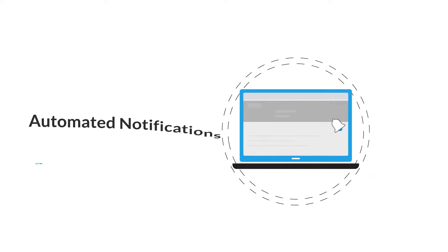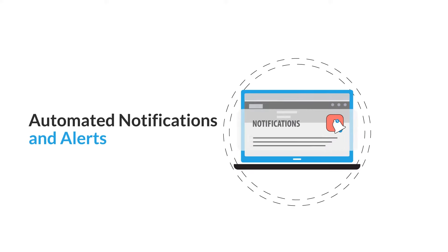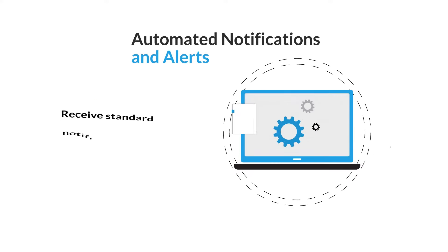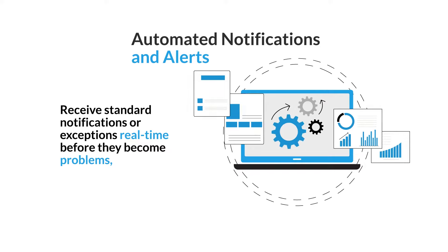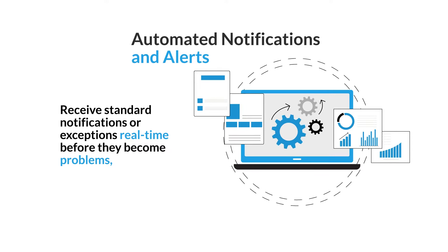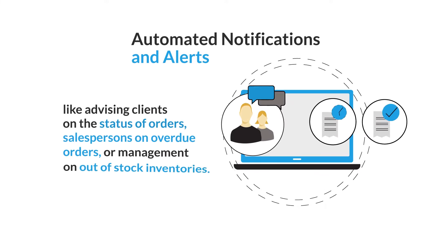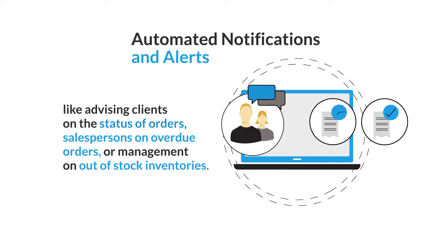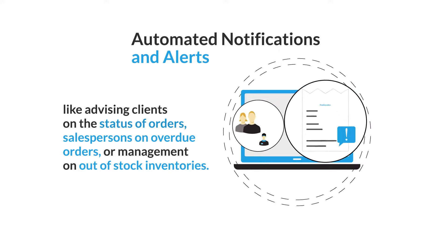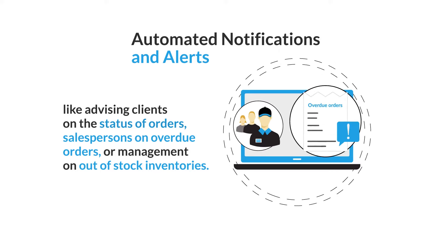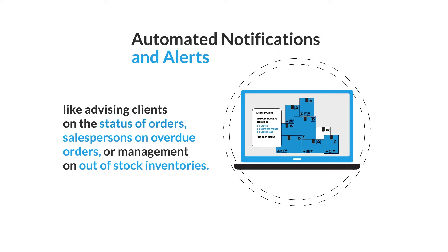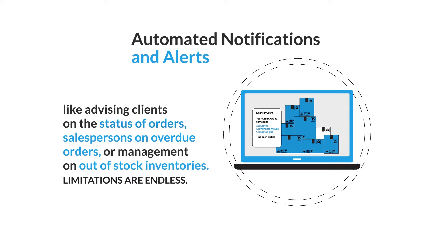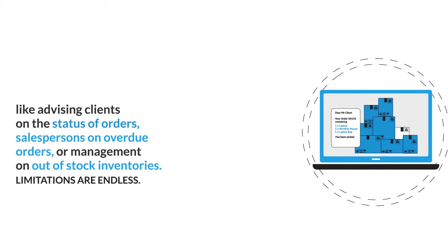Automated notifications and alerts: receive standard notifications or exceptions in real-time before they become problems — like advising clients on the status of orders, salespersons on overdue orders, or management on out-of-stock inventories. The possibilities are endless.